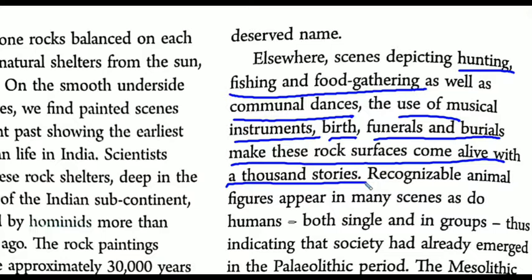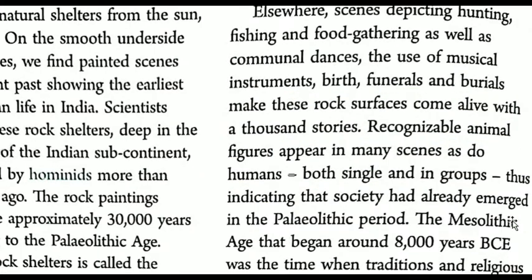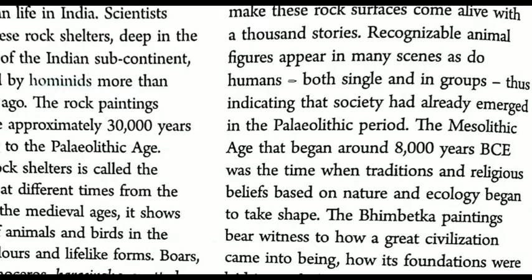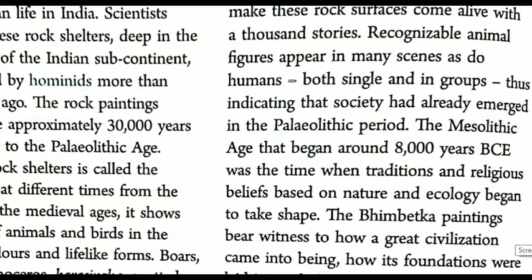Recognizable animal figures appear in many scenes, both single and in groups, as do human beings — single human beings and groups. From seeing people in groups, we can understand that they also lived in society. That means society had already started, because society means a group of people. By seeing paintings of people in a group, we come to know that in the Paleolithic age, society came into existence.